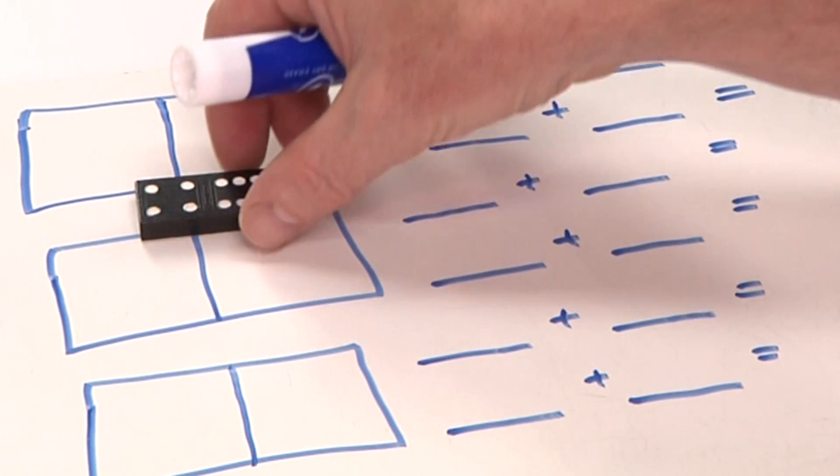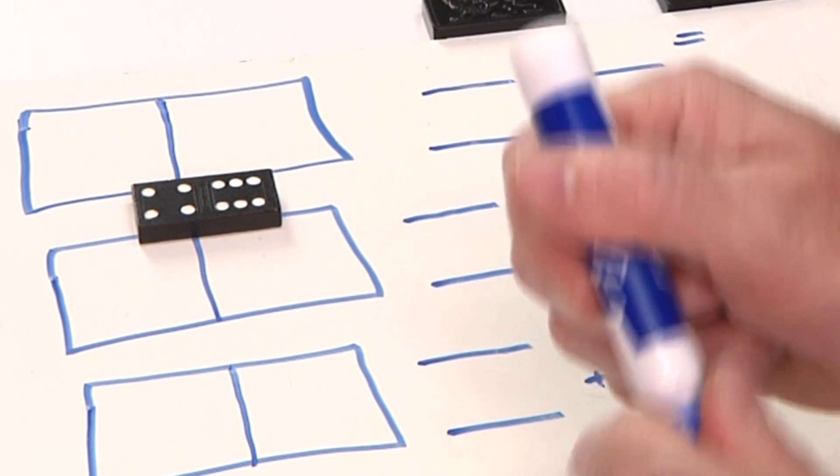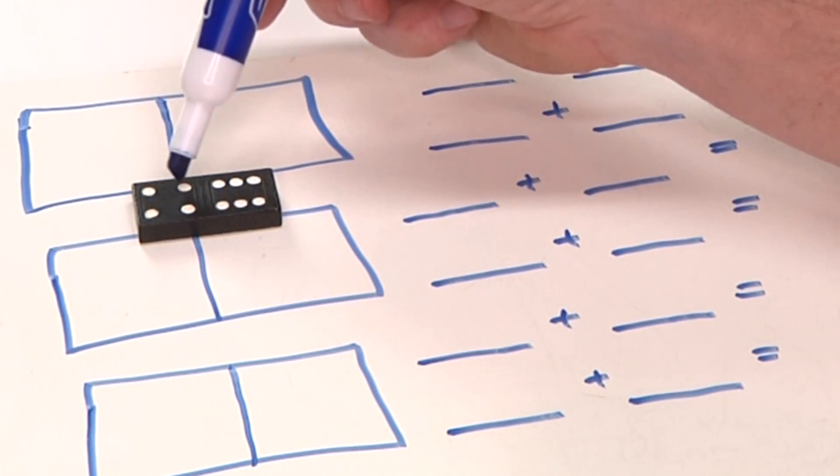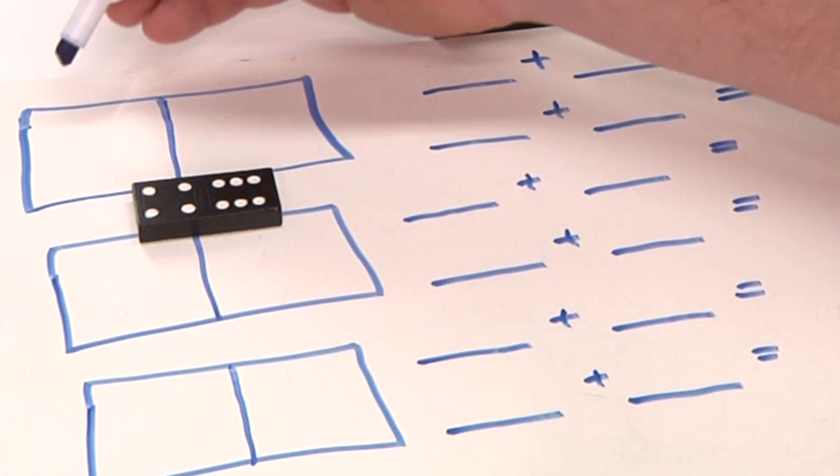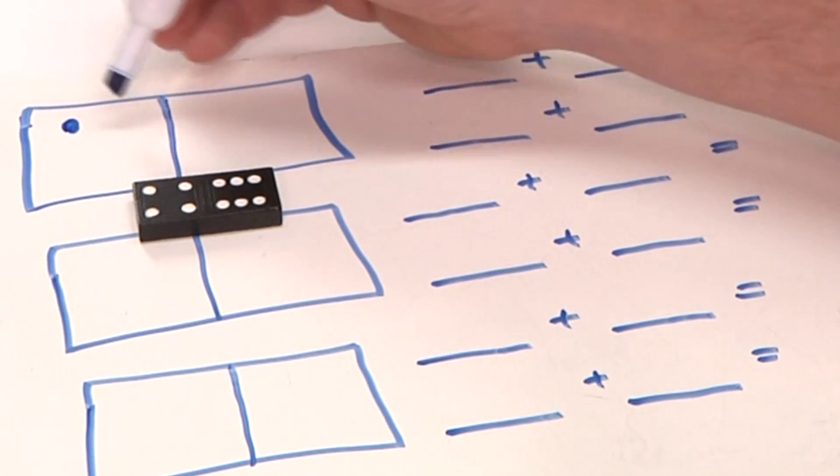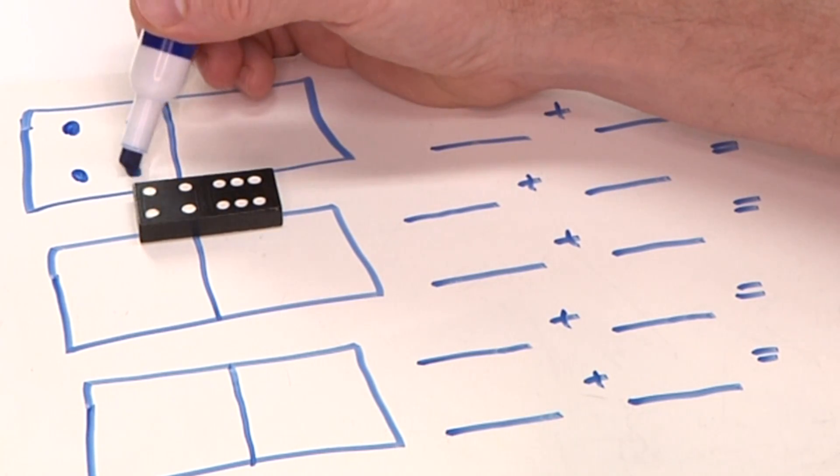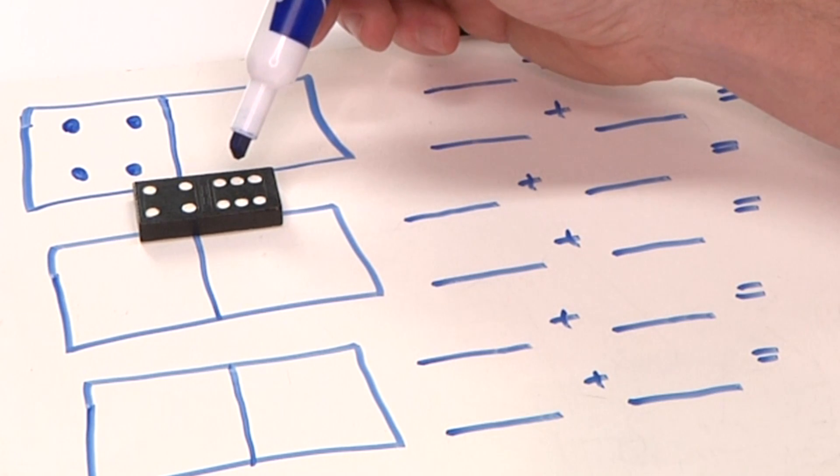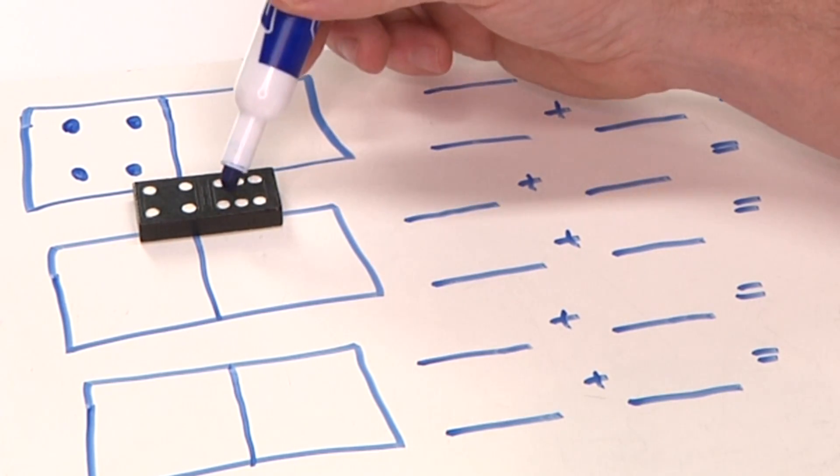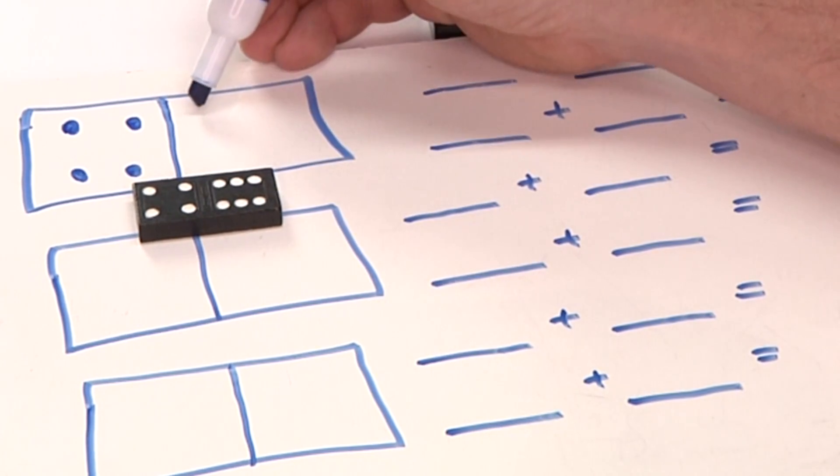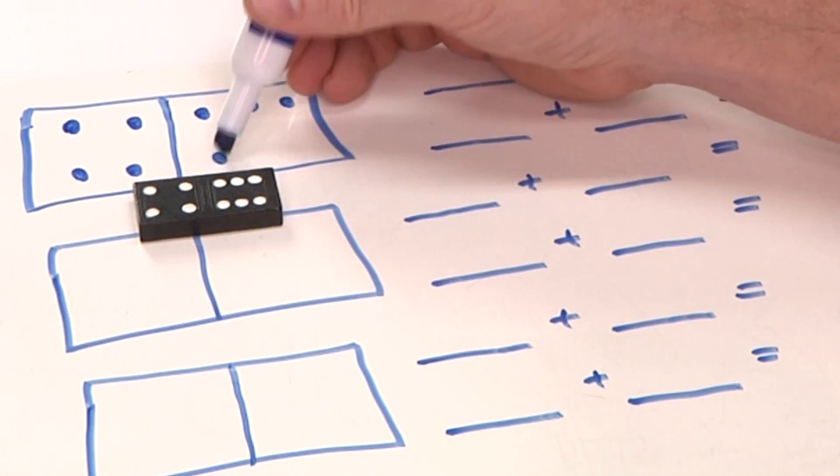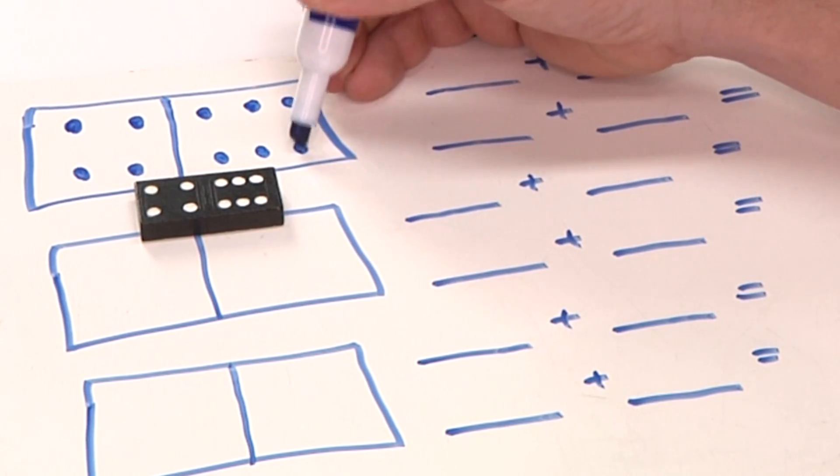Let me count these dots. I have 1, 2, 3, 4. I'm going to mark those dots right here on my board: 1, 2, 3, 4. On this side we have six dots: 1, 2, 3, 4, 5, 6.